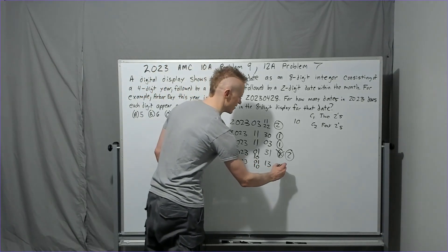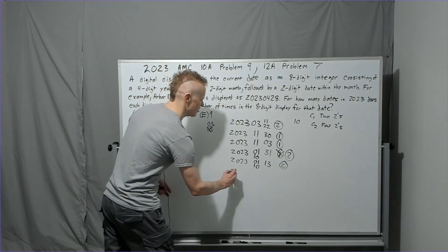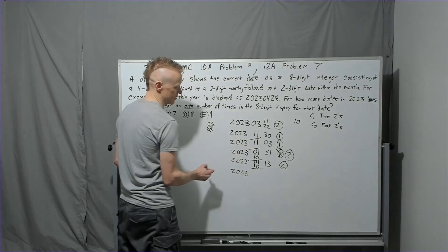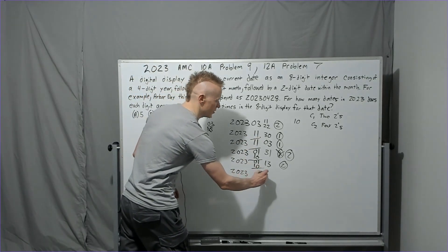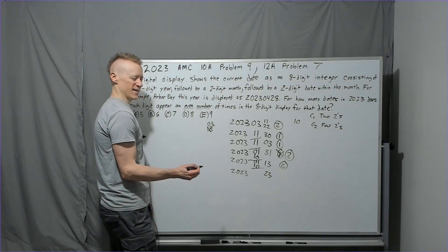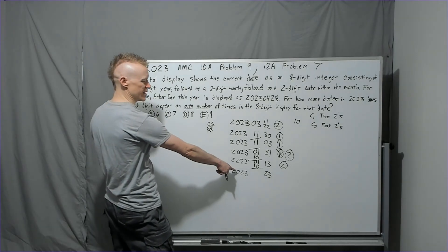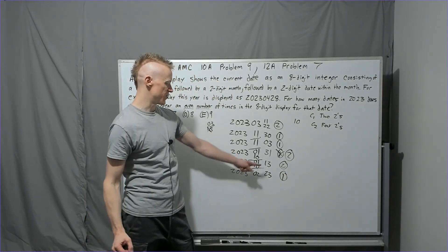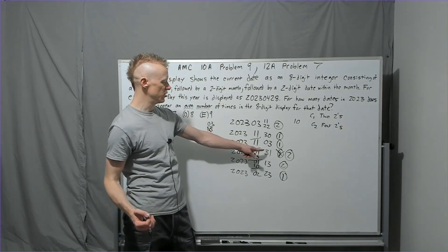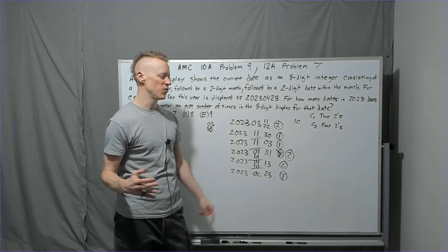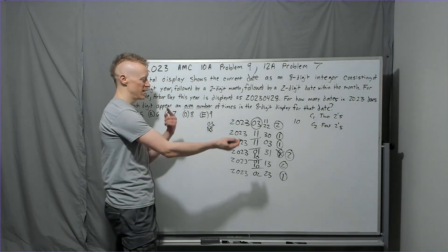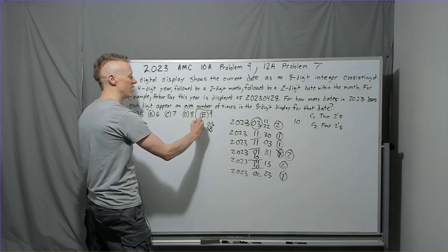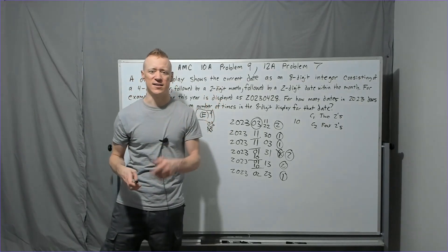Next we try day 13: that uses a 1 and a 3, so the month needs an extra 0 and 1 — options are 01 (January) and 10 (October), giving two more cases. Finally, trying day 23 with month 02 (February): that uses the extra 2 and 3, and we need an extra 0, satisfied by month 02. Checking all possibilities for the 3 — positions 03, 13, 23, 30, 31, 33 (invalid) — we've exhausted them. Total: 9 dates.